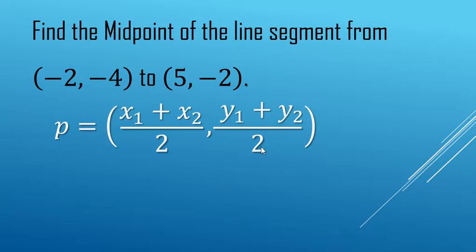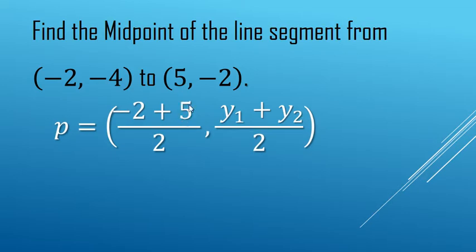x1 is negative 2, x2 is 5. Add them up: negative 2 plus 5 makes positive 3. That's the x value. Now for the y values, check this out. Between negative 4 and negative 2, the number that's right smack dab in the middle...